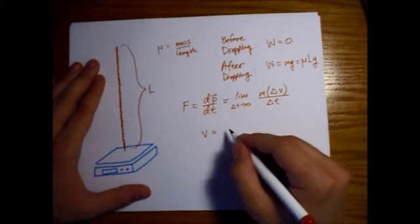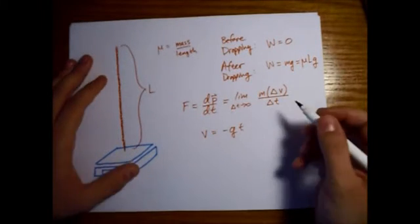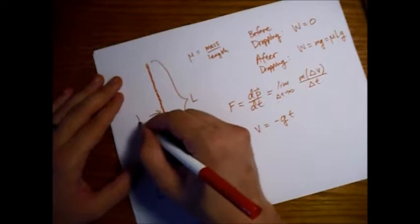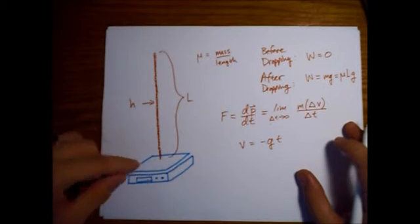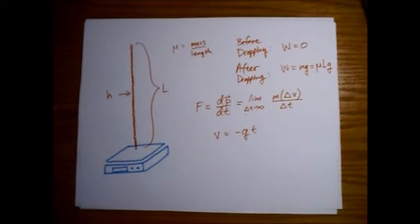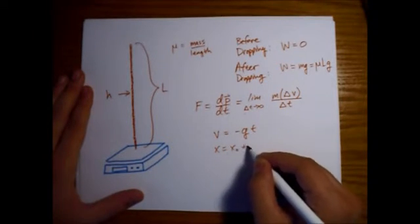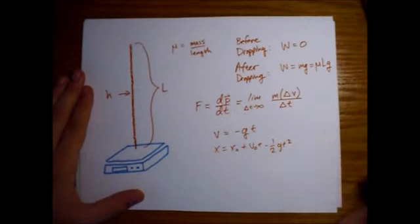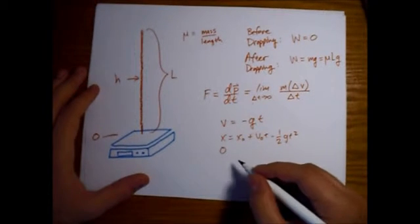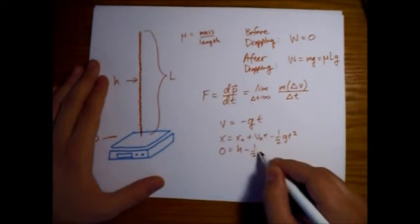So v is equal to any initial v, which is zero, and then just minus g multiplied by the time that it spends falling. So suppose we pick a point in the chain that we can just use as a reference point. I'll call this point h, because it's h meters or whatever above the scale. So let's solve for the t real quick for this. For that, we just use x equals x naught plus v naught t minus one half gt squared.